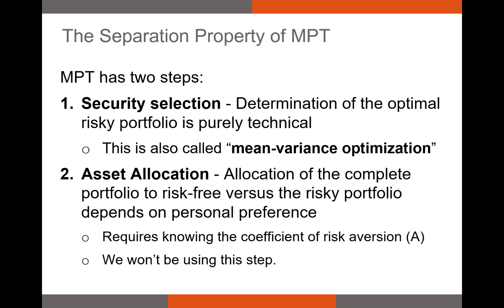The second step of modern portfolio theory is asset allocation. This step is not commonly seen in the real world, mostly because to complete it you need to know your coefficient of risk aversion, which is very hard to measure. Essentially, asset allocation determines how much of your total wealth to allocate to a risk-free asset like a T-bill versus the risky portfolio optimized in step one. In class we won't focus on this second step, but when you get to 4.10, you will be using it in a big way.